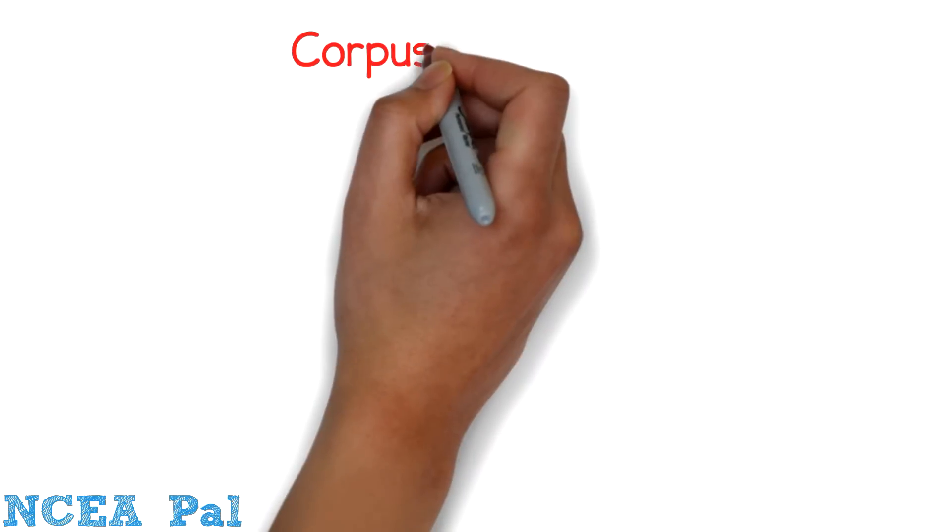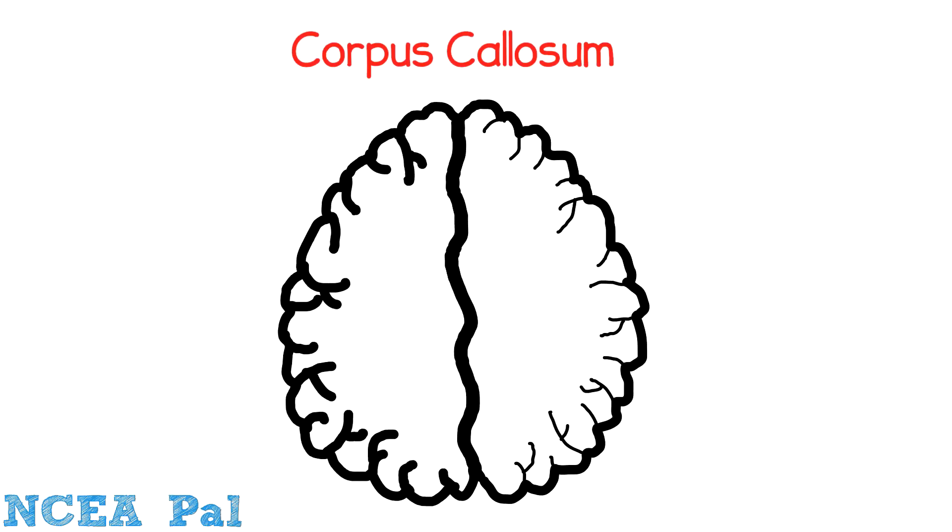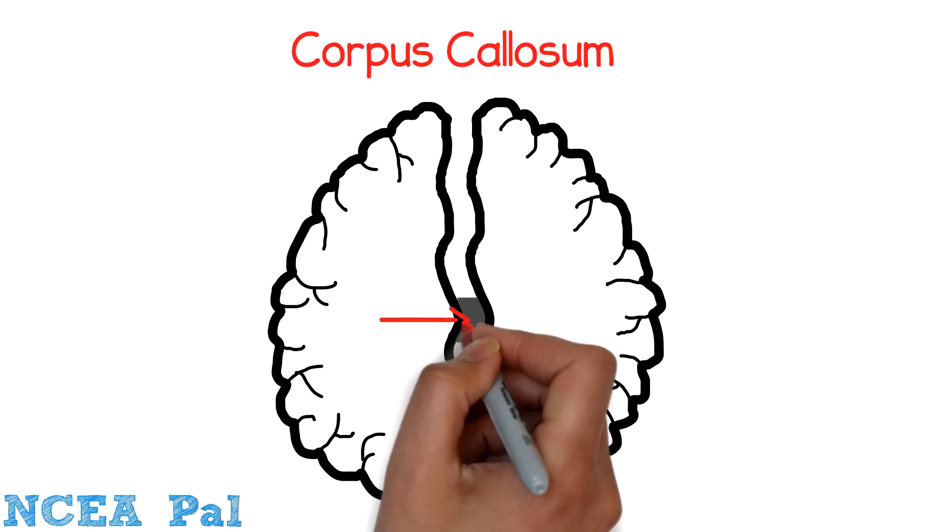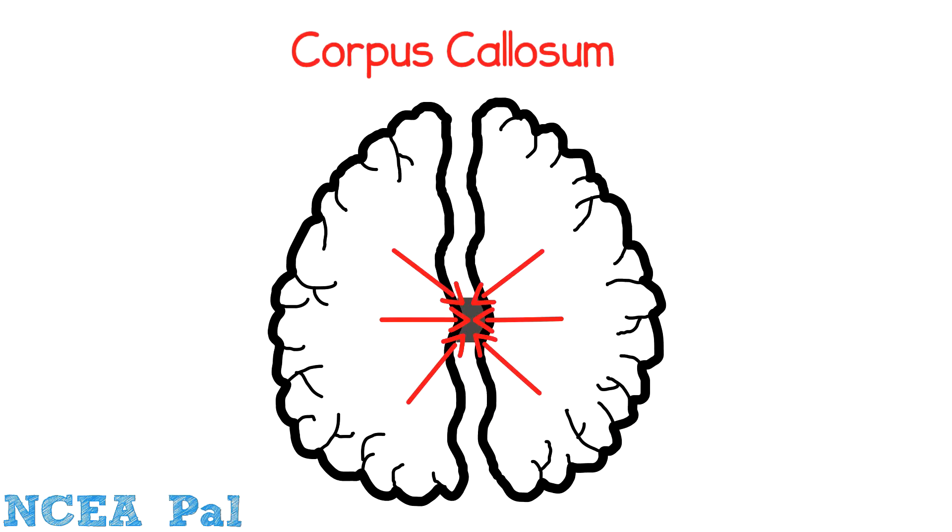It's all to do with this part of your brain called the corpus callosum, which is basically like a bridge that joins the left and the right brain. So the information coming from your left brain and the information coming from your right brain joins together in this bridge right down the center of your brain called the corpus callosum.